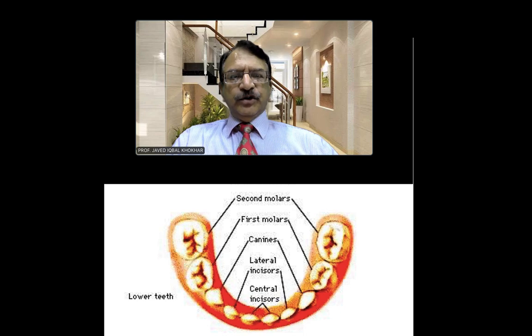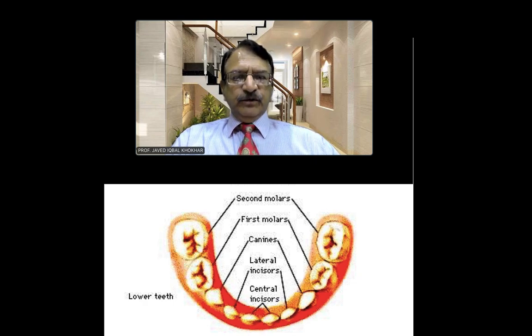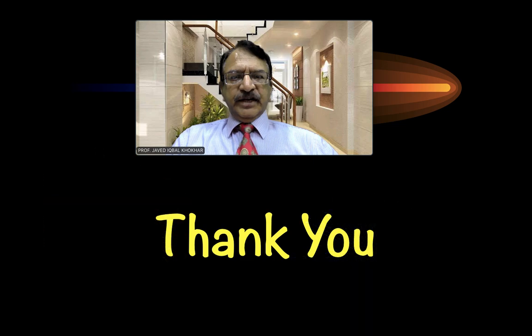In the lower jaw, similarly, in the center there are 2 incisors, and on their sides there are 2 lateral incisors. Further lateral, there are 2 canines, then 2 first molars and 2 second molars — 10 teeth total in the lower jaw. This was all about the temporary teeth. Thank you very much.